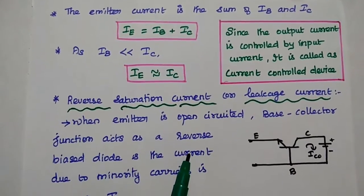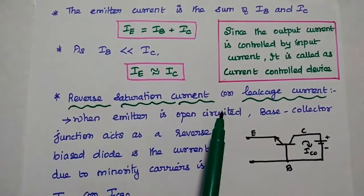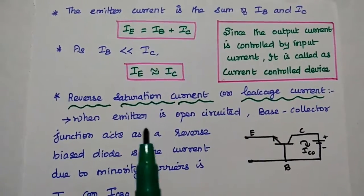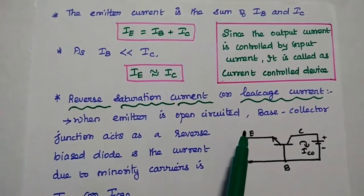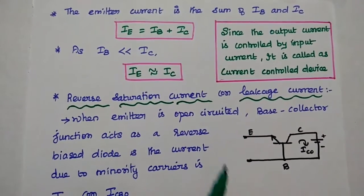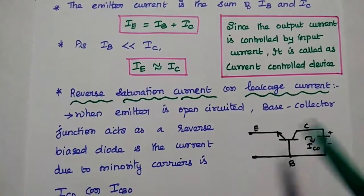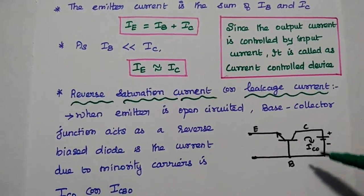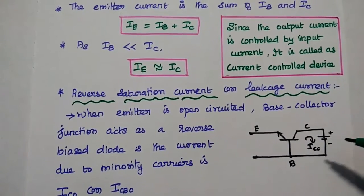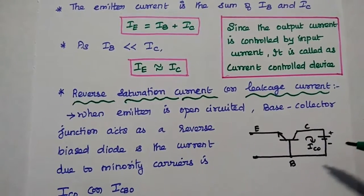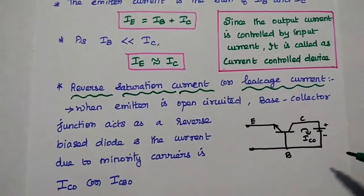There is one more current in BJT: reverse saturation current or leakage current. Whenever the emitter side is open-circuited, there is no input given at this point. The base-collector junction acts as a reverse-biased diode. The current due to the minority carriers is called leakage current or reverse saturation current.